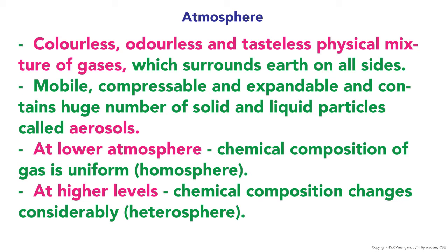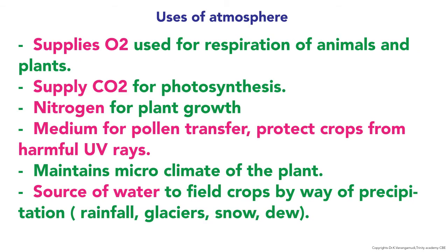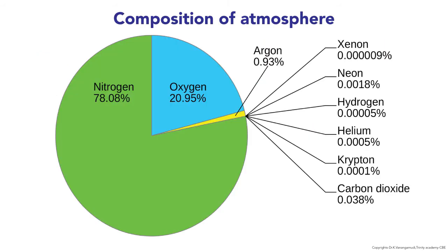At lower levels, the chemical composition of gases is uniform — that is called the homosphere. At higher levels of the atmosphere, the chemical composition changes considerably — that is called the heterosphere. The uses of atmosphere include: it supplies oxygen for respiration of animals and plants, carbon dioxide to plants for photosynthesis, and nitrogen for plant growth. It is a medium for pollen transfer, protects crops from harmful UV rays, maintains the micro-climate of plants, and is the source of water to field crops by way of precipitation, which includes rainfall, glacier, snow, and dew.